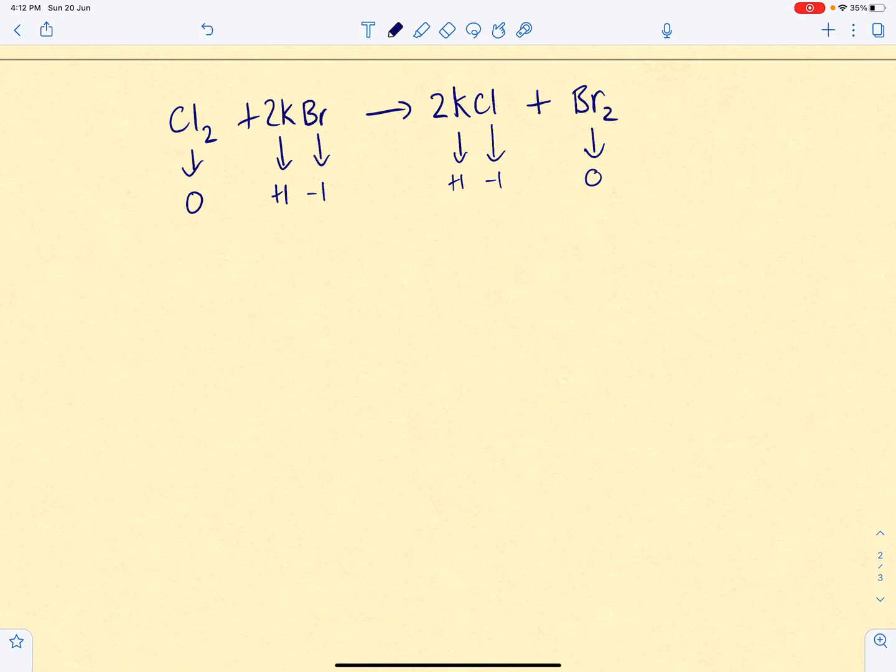Now, there's three species here. You can't write half equations for three species because you can only have two halves to make a whole. So, you can only ever write half equations for two things. One of these things hasn't changed. Chlorine has gone from zero to plus one. The potassium has gone from plus one to plus one. No change. The bromine has gone from minus one to zero. That's a change.